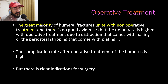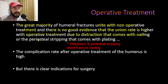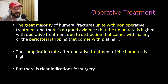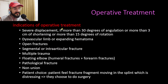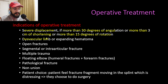Active abduction is avoided until the fracture is united at around nine weeks. Regarding operative treatment, the great majority of humeral shaft fractures unite with non-operative treatment, and there is no good evidence that union rates are higher with operative treatment. The complication rate after operative treatment of the humerus is high. However, there are clear indications for surgery, including severe displacement with more than 30 degrees of angulation, more than 3 centimeters of shortening, or more than 15 degrees of rotation.